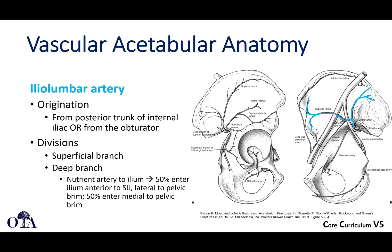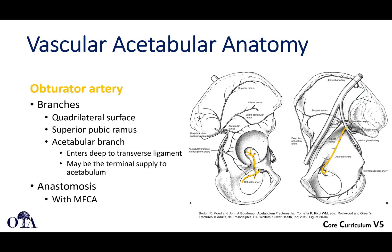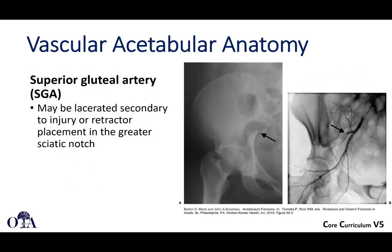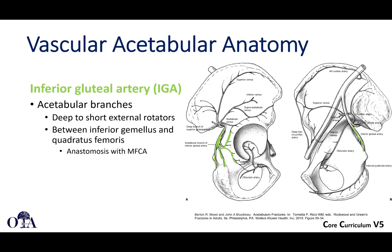The iliolumbar artery comes from the posterior trunk of the internal iliac or from the obturator, and it is a nutrient artery to the ilium. The obturator artery is highlighted here with branches to the quadrilateral surface, exiting through the obturator foramen. The superior gluteal artery is something we see injured very frequently with pelvic ring injuries. It's an important contributor to the acetabular blood supply with multiple branches. The inferior gluteal artery is deep to the short external rotators and also exits through the greater sciatic notch.